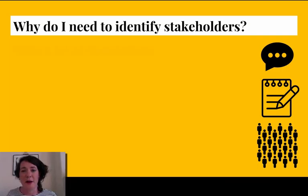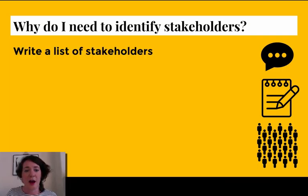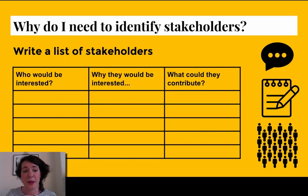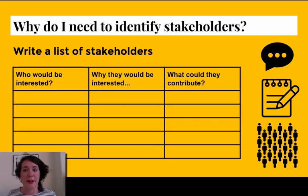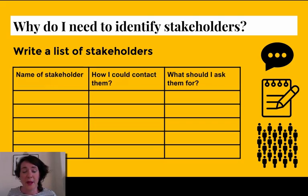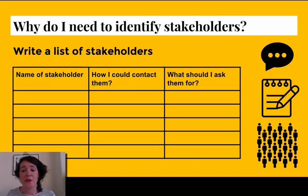When thinking about all these different stakeholders, I'd recommend writing a list. Work out in columns: who would be interested, why they would be interested in your project, and what they could contribute — whether that's skills, equipment, venues, cash, or donations of different kinds. Write the name of each stakeholder — it might be an organisation or an individual — and think about how you could contact them and what you should ask them for.